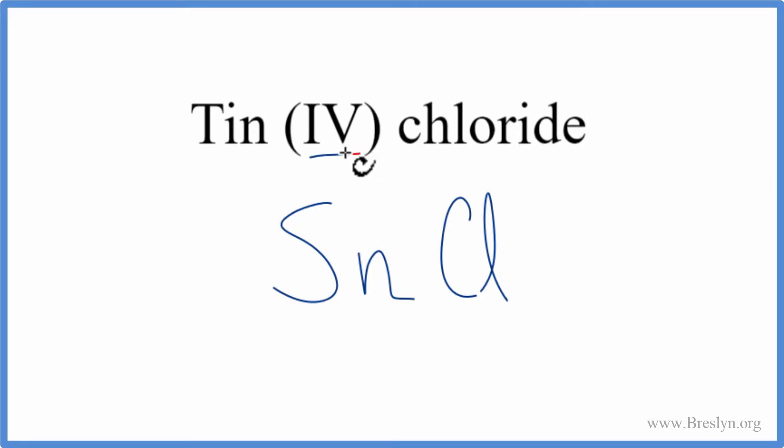Tin's easy because we have this Roman numeral 4 here. That means it has a 4+ ionic charge. The chlorine from the periodic table has a 1- charge.